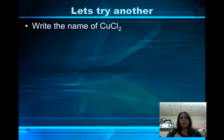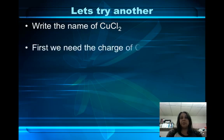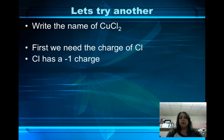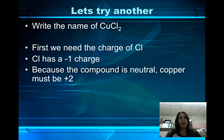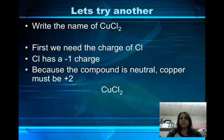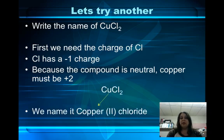Now let's try another one: CuCl2. We don't know the charge on Cu, which is copper, but we're going to use the charge on chlorine. We know chlorine has a negative 1 charge. Because the compound is neutral and there are 2 chlorines, copper must be positive 2. So we name this copper(II) chloride.